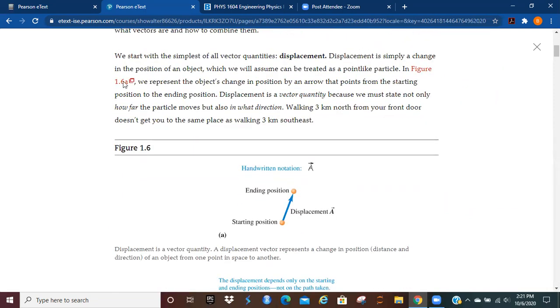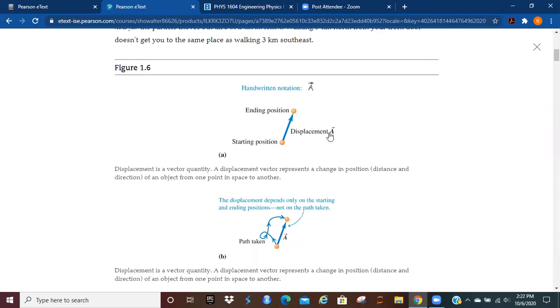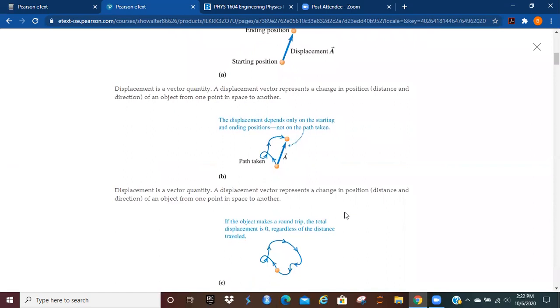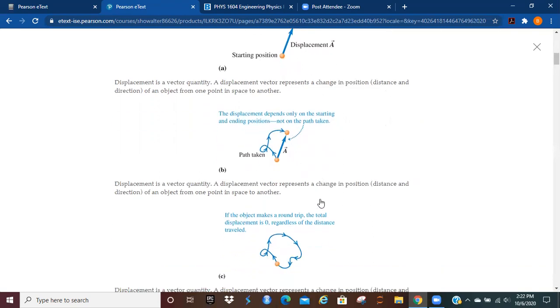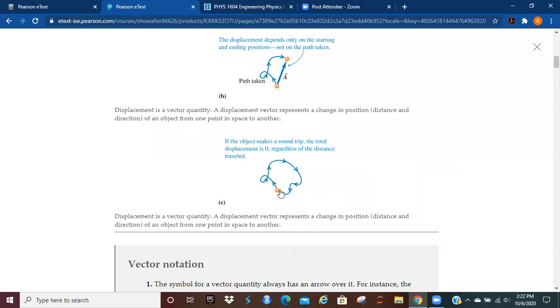Displacement. Displacement is simply a change in the position of an object. We're going to assume that it can be treated as a point like particle. So we've got a starting position, we've got an ending position, and we've got a path to go through that. That's what the displacement vector is going to look like. It's going to represent the change in position, and it depends only on the starting and ending points. It doesn't really matter how you get there. It just matters that you got there.